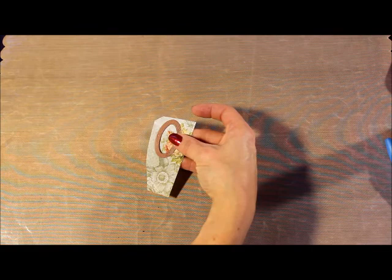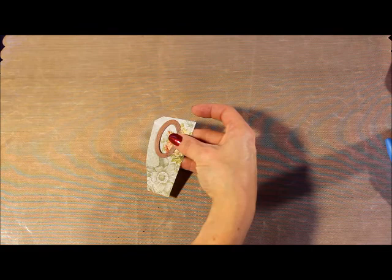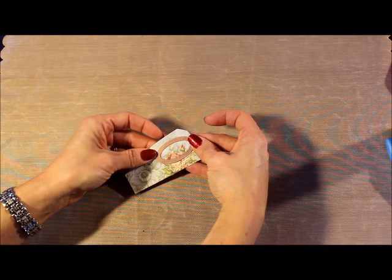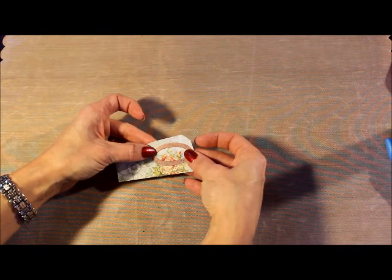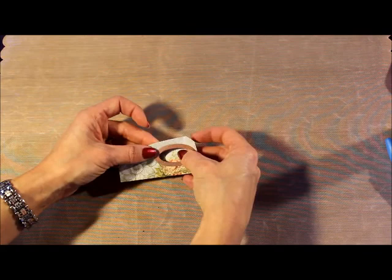So what I did was I cut the extra pattern paper off and I placed my oval die number two, number one being the smallest, over top of the rose image that I wanted to use and I taped it with repositionable tape and cut and embossed it.